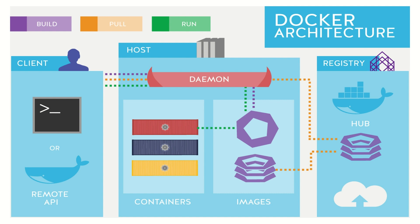Coming to Docker architecture, we have three parts: the client, the host, and the registry. The client is a command line interface through which we can run commands and communicate with the Docker host, which is the Docker daemon. Docker daemon is a server where we can create our images and containers and run those containers. Docker Hub is a repository where we can push our Docker images.